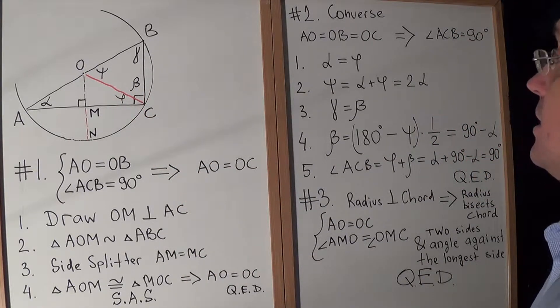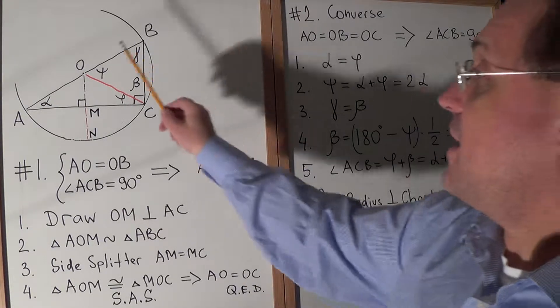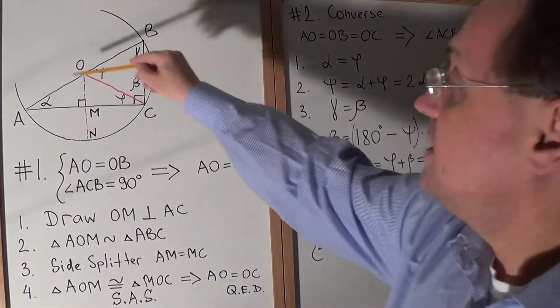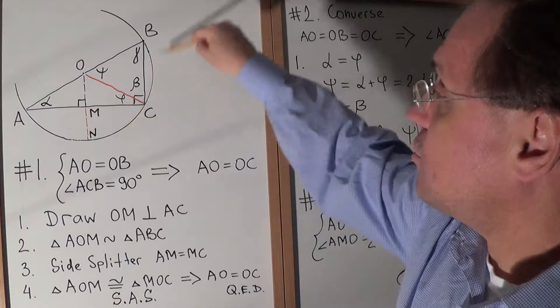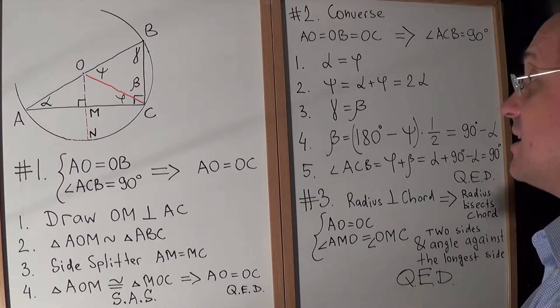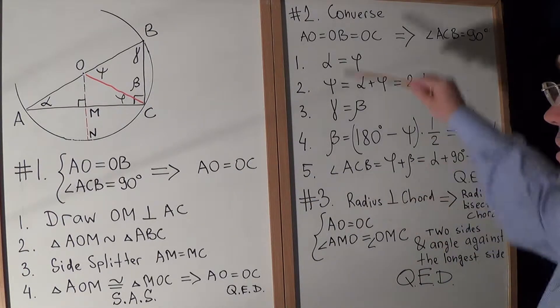Theorem number two, the converse: If we have AO equals OC equals OB, in other words if we have this circumscribed circle and O is the center of that circle, then angle C is the right angle. So let's prove it.